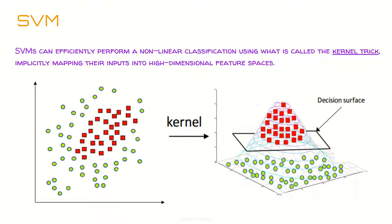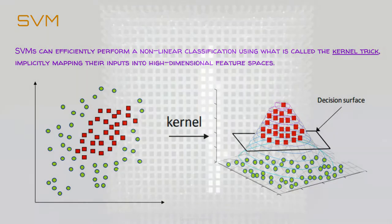When data can't be separated by a line, we use the kernel trick, which we'll cover later. For now, think of it like a cloth — the left diagram is printed on a cloth, and you pull the cloth up right in the middle of the red parts, so you get an image that looks like the right side. That's the idea of the kernel trick.